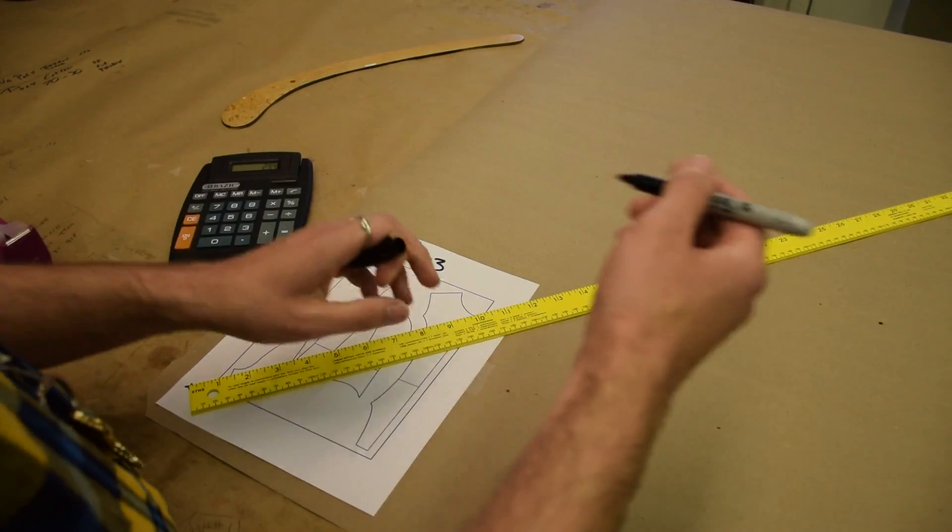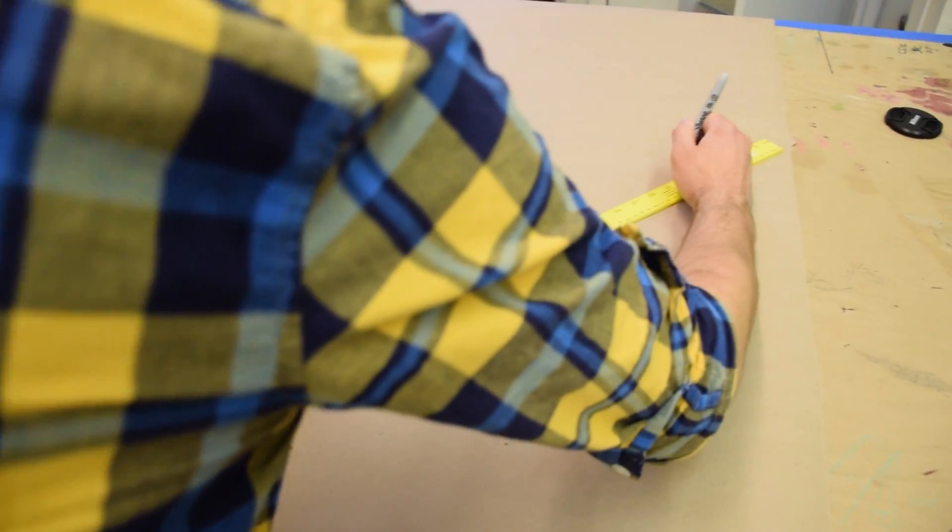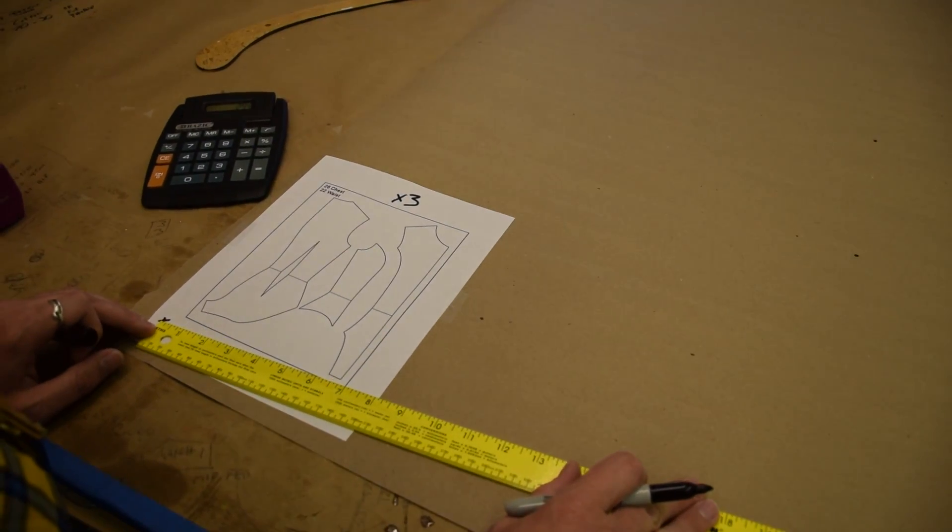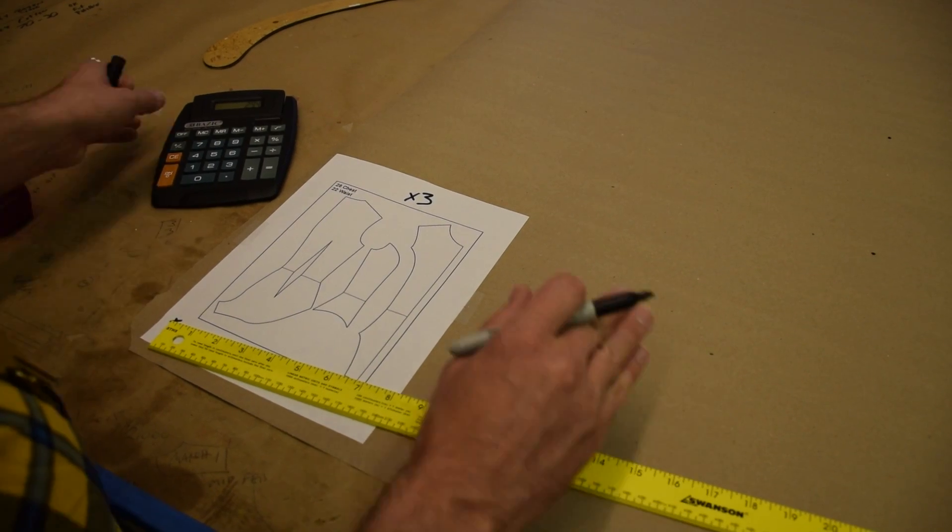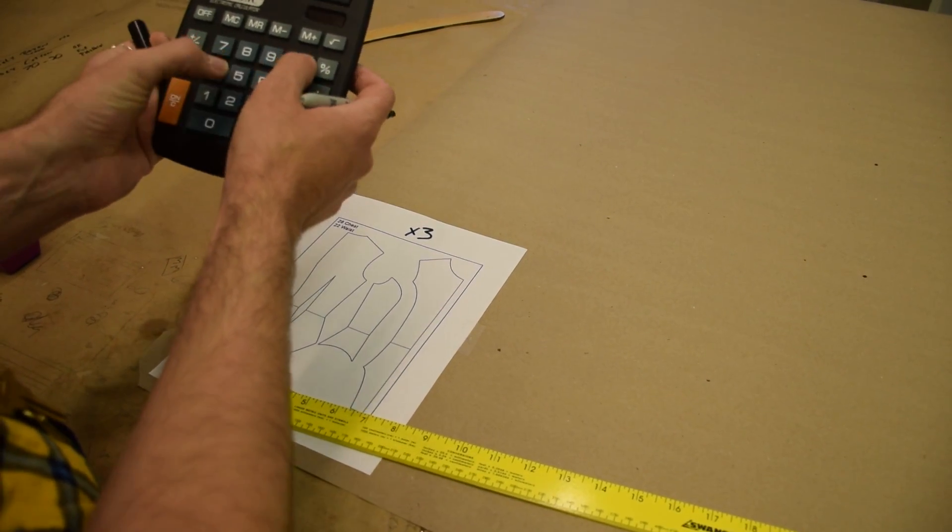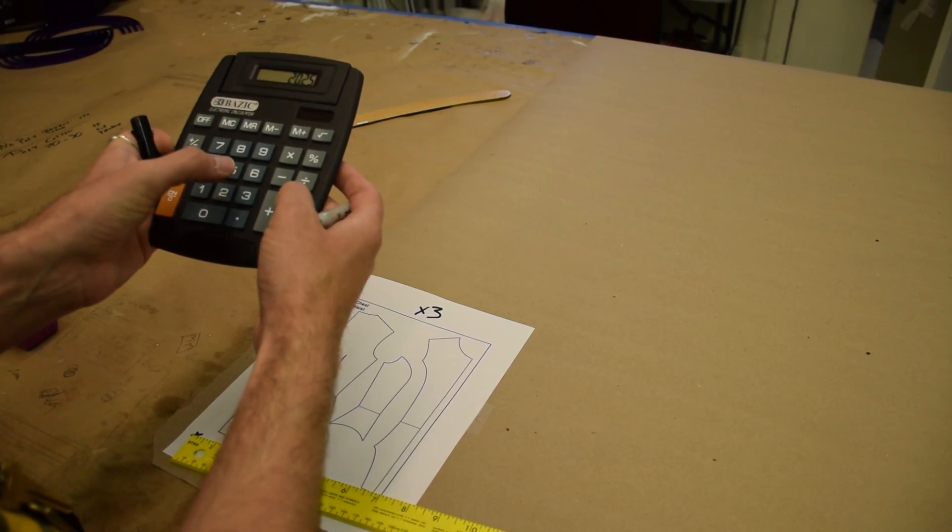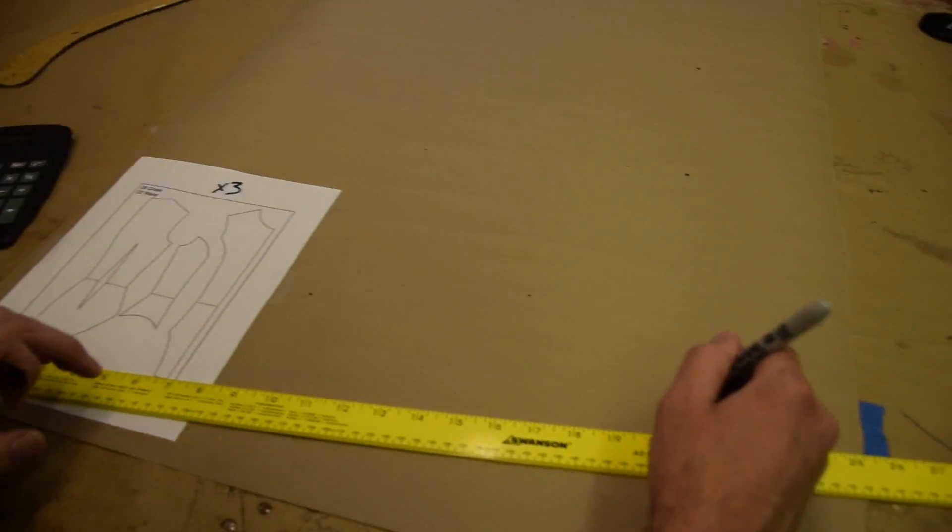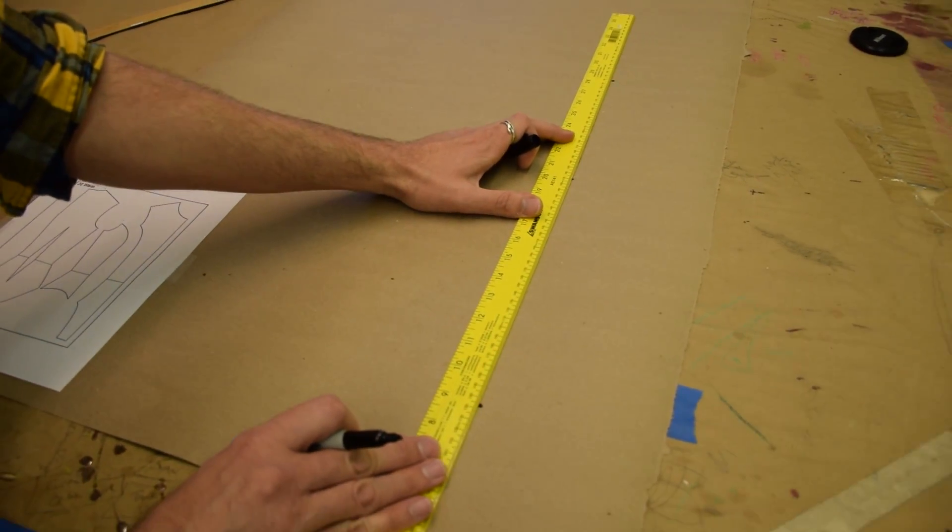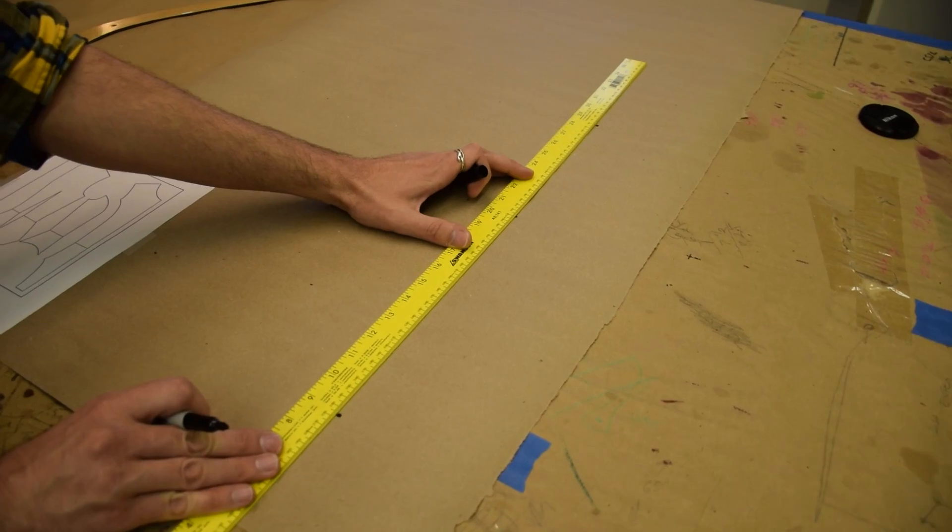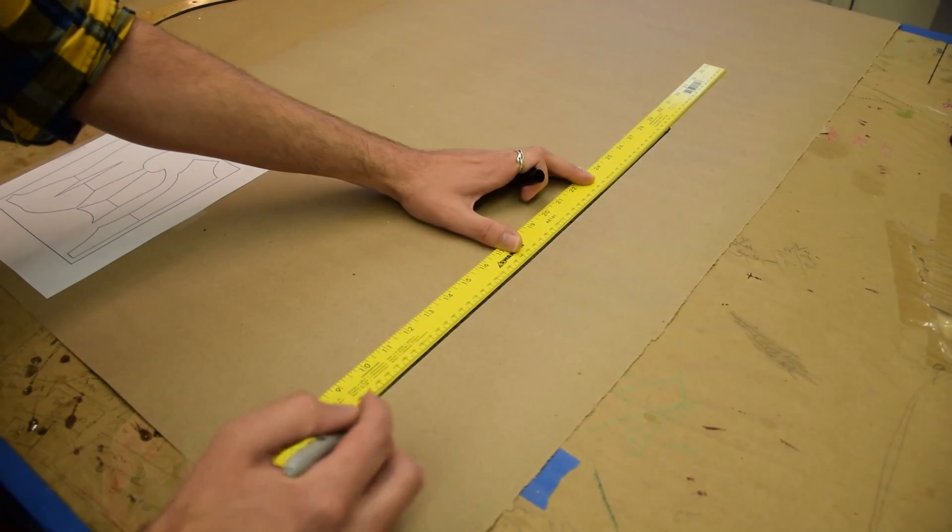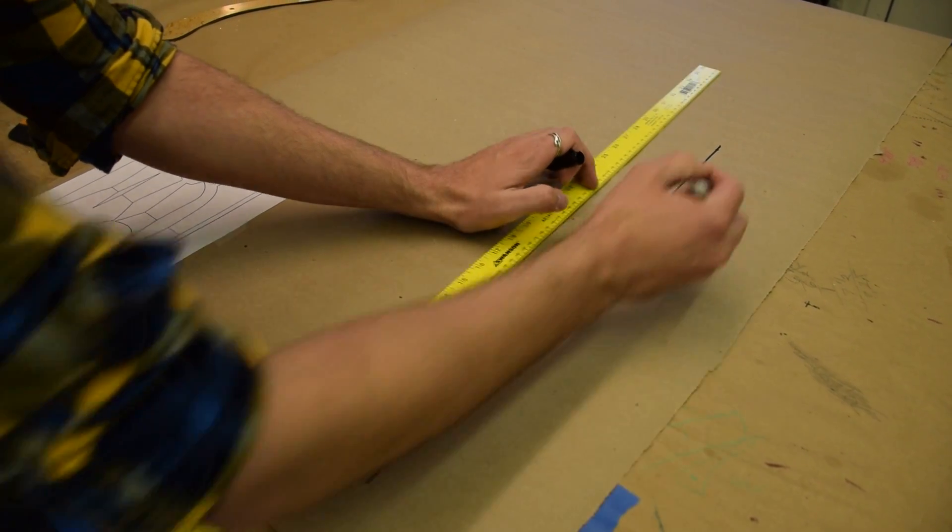Then we could do the bottom of our pattern piece, which is 6 and 3 quarters. So 6.75 times three is 20 and a quarter. And then we can just connect those dots with a straight line. And since we're human, some of the dots are going to be inside and outside of the straight line, so you just kind of split the difference.